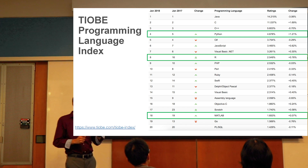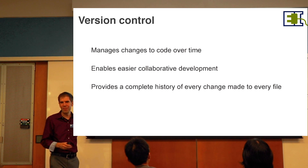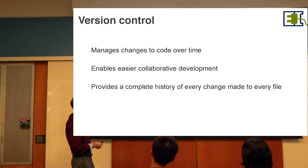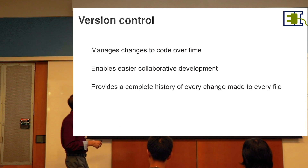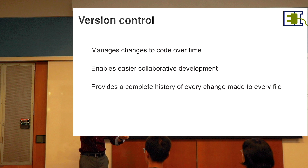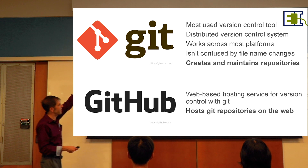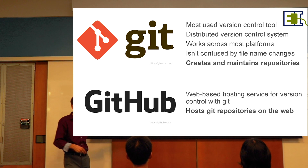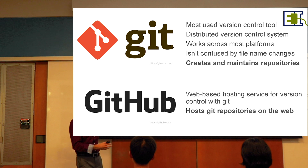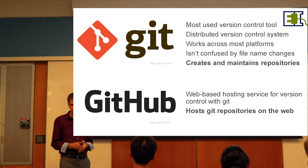Another thing you'll want if you're going to be working with data science to any extent is version control. This involves managing changes to code over time, enabling collaboration, and providing a complete history of changes made — so you don't end up with my_file_v1, v2, v2b. The two popular resources for that are Git, which is the system itself, and GitHub, a very popular web-based hosting platform for Git repositories. There's also GitLab, which has a site license available as well.